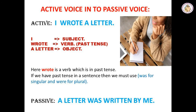Look at the third sentence: I wrote a letter. 'Wrote' is the verb in past tense. For past tense, we use 'was' or 'were'. 'A letter' is singular, so we select 'was'. 'Written' is the third form of 'wrote'. So the passive sentence is: a letter was written by me.